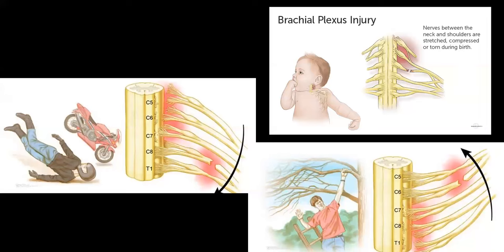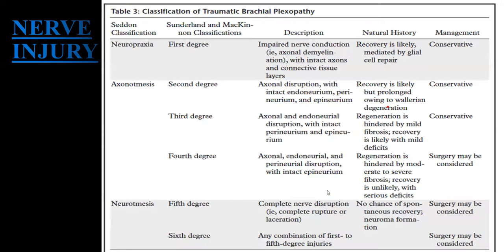In this schematic diagram, you can see nerve fibers torn due to stretching between the neck and the shoulder, and nerve fibers torn due to outstretching of the hand. Let's discuss the categorization of nerve injury plexopathy.